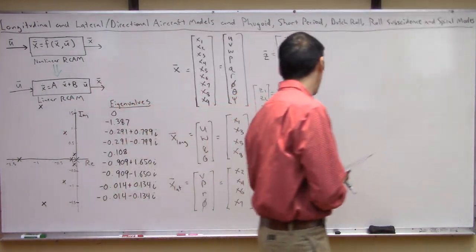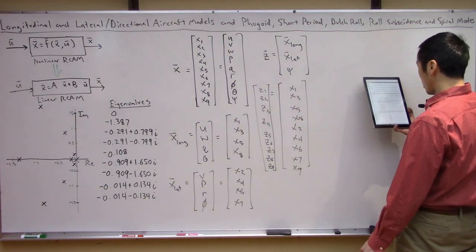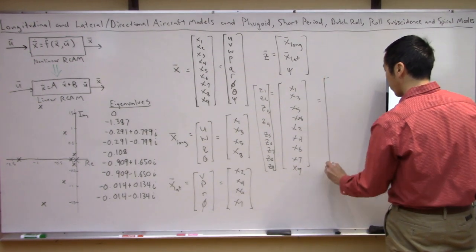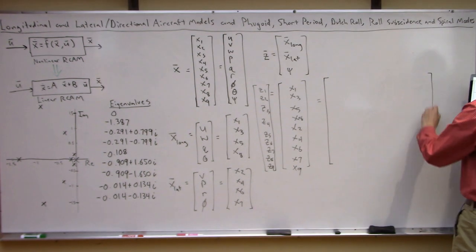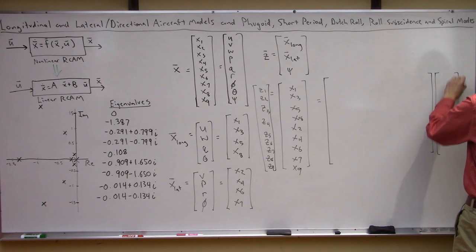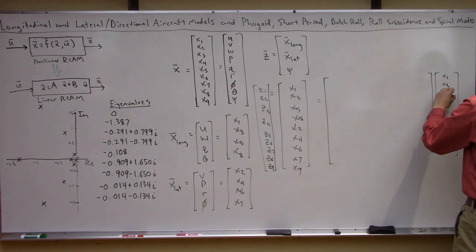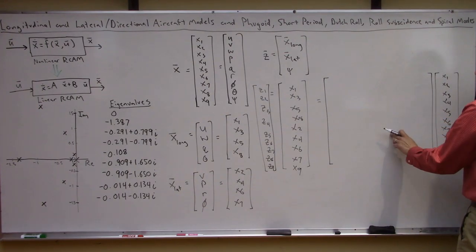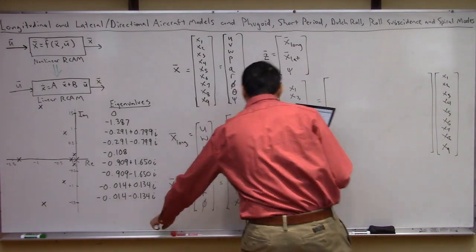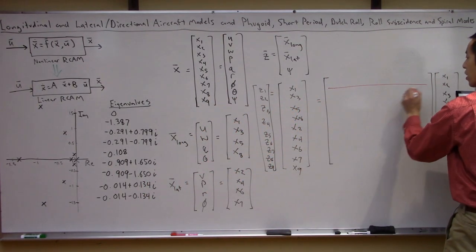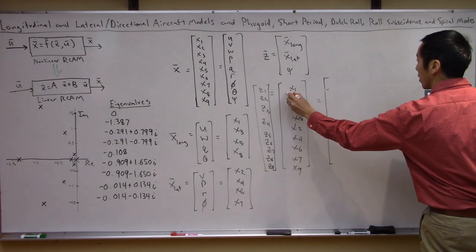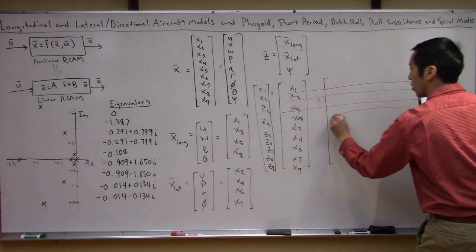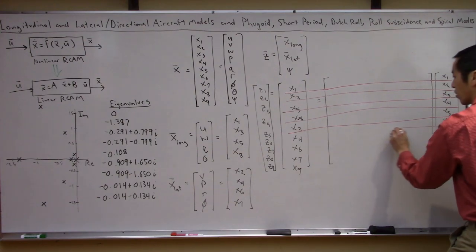At the end of the day, you get an equation: Z equals TINV times X, where TINV is this nine-by-nine permutation matrix and X is your original state vector. Taking the inverse, X equals T times Z — this is our similarity transformation. This allows us to rewrite the linear system using the new set of states where we stacked up the longitudinal ones on top of the lateral directional ones with Psi at the bottom. So we still have a linear RCAM model, just with a different internal state representation: Z-dot equals A-tilde Z plus B-tilde U, where A-tilde equals T-inverse A T, and B-tilde equals T-inverse B.